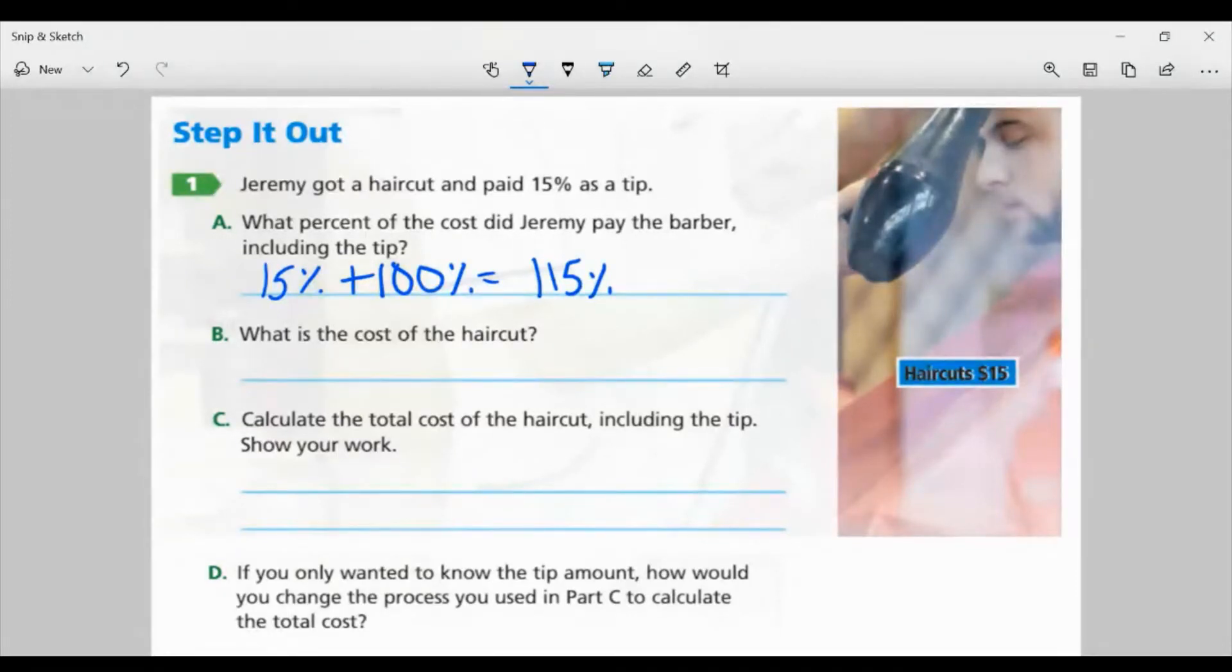Part B: What is the cost of the haircut? Well, the haircuts are $15, right? That's what it says right there on the side in the picture. Part C: Calculate the total cost of the haircut, including the tip. Show your work. So whenever I would find a percent of 15, normally we'd say, what's 15% of $15? And then we add that amount to the 15 to see how much they paid. But in this case, I know it's 115% is what he paid to the barber.